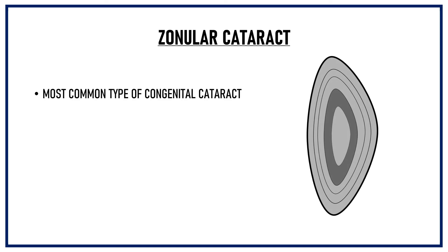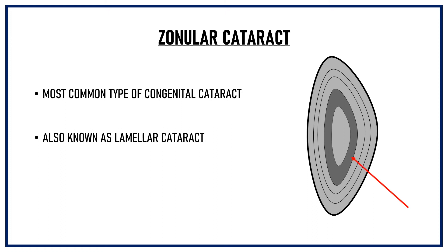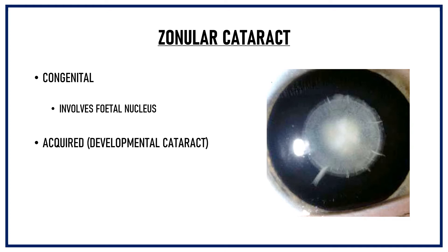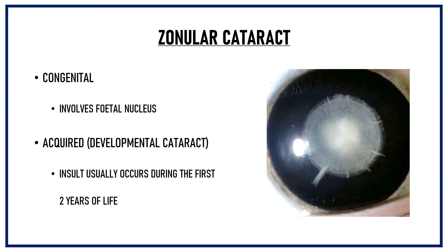Zonular cataract is the most common type of congenital cataract. It is also known as lamellar cataract. In this cataract, only a specific zone or lamella of the lens is opacified. Zonular cataract can be congenital, in which case it usually involves the fetal nucleus, or it can be acquired, where it is known as developmental cataract. The insult usually occurs during the first two years of life, for example in diseases like rickets or hypocalcemia, and in such cases it affects the infantile nucleus. Radial spoke-like opacities known as riders are characteristically seen in zonular cataract.